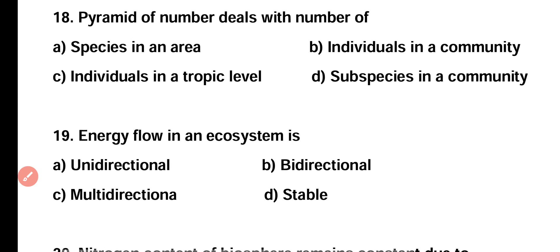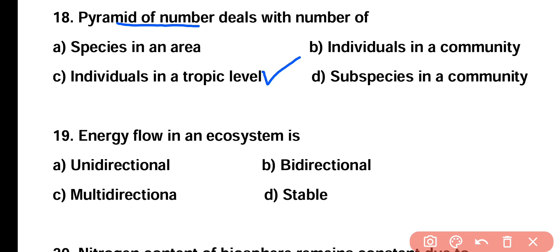Question number eighteen: pyramid of number deals with the number of species in an area, number of individuals in a community, number of individuals in a trophic level, or number of subspecies in a community? Correct answer is option C. Pyramid of number deals with the number of individuals at a particular trophic level.